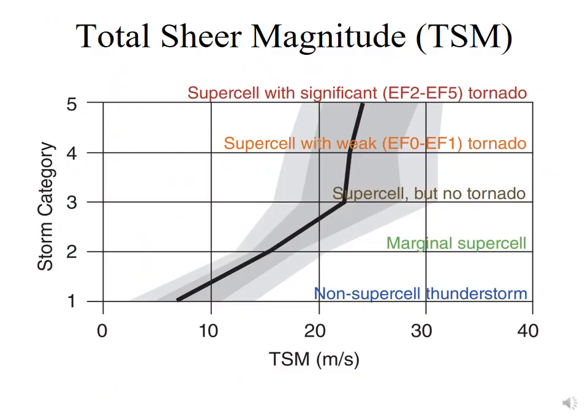Is the total shear magnitude a good predictor of thunderstorm severity? Not really. You need lift, instability, and moisture for non-supercell thunderstorms, and shear plus a capping inversion and dry layer to get supercells. With no shear versus some shear there's a difference in the type of thunderstorm that forms, but once a supercell forms, total shear magnitude is not a good predictor of its severity. However, you do need a higher total shear magnitude to get multi-cell thunderstorms to evolve into supercells in the first place.